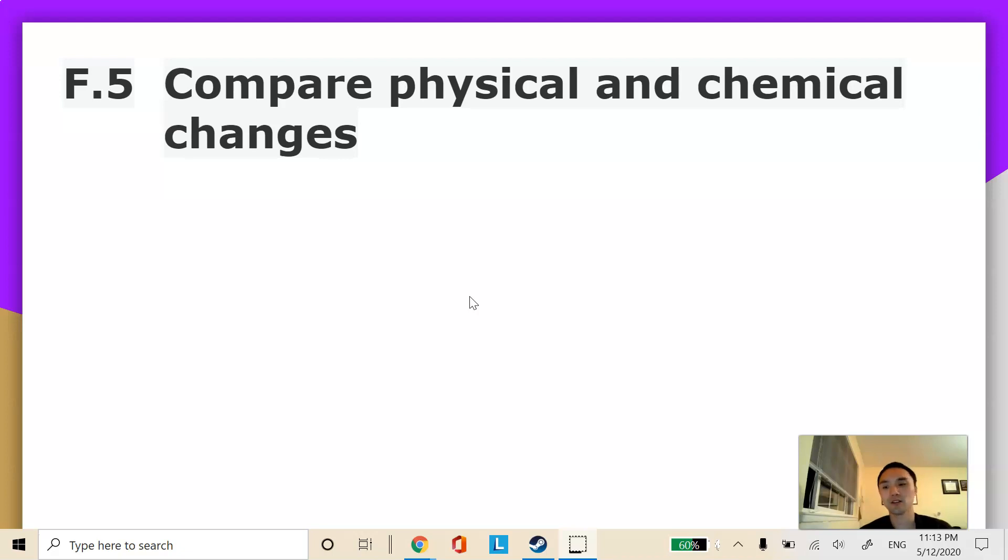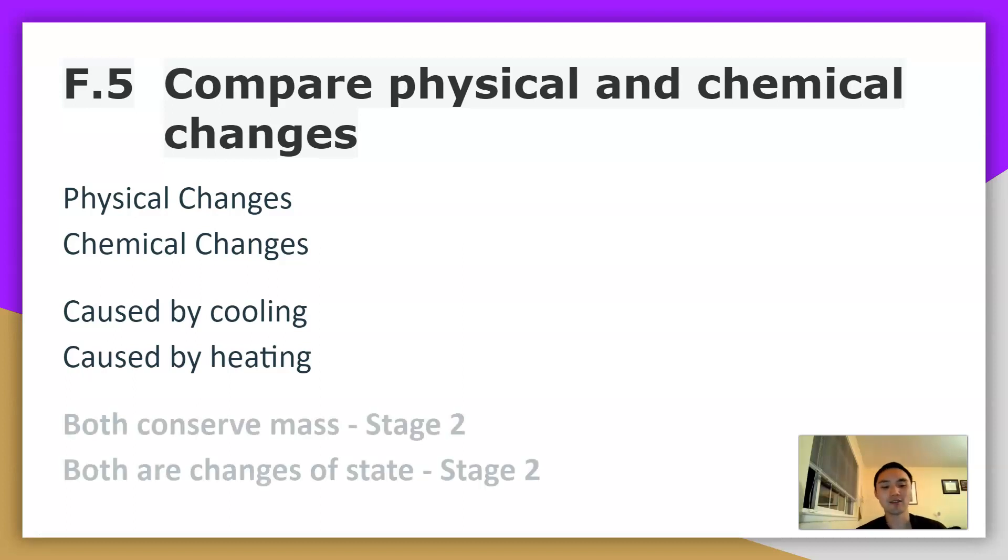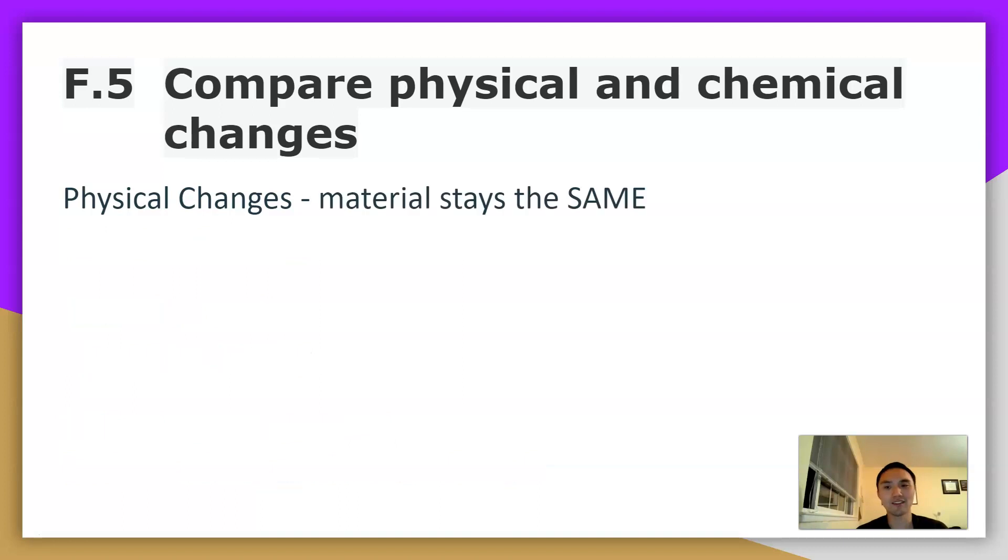Before we start, I want to go over some of the answer choices that you might encounter. So first couple sets you'll see are physical changes and chemical changes. Another set you'll see is caused by cooling, caused by heating, and the last sets you'll see in stage two are both conserved mass, or both are changes of state. Let's do a quick review of what these things mean.